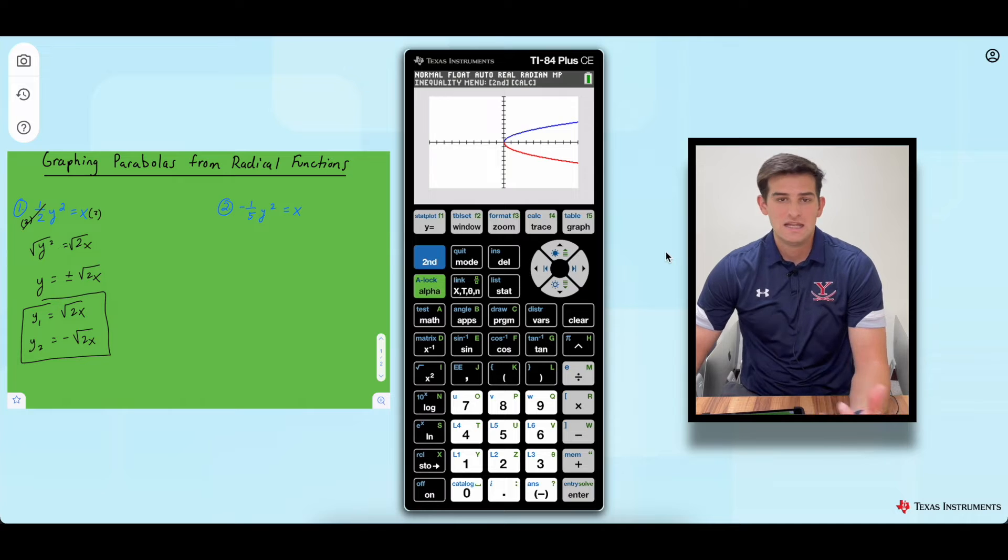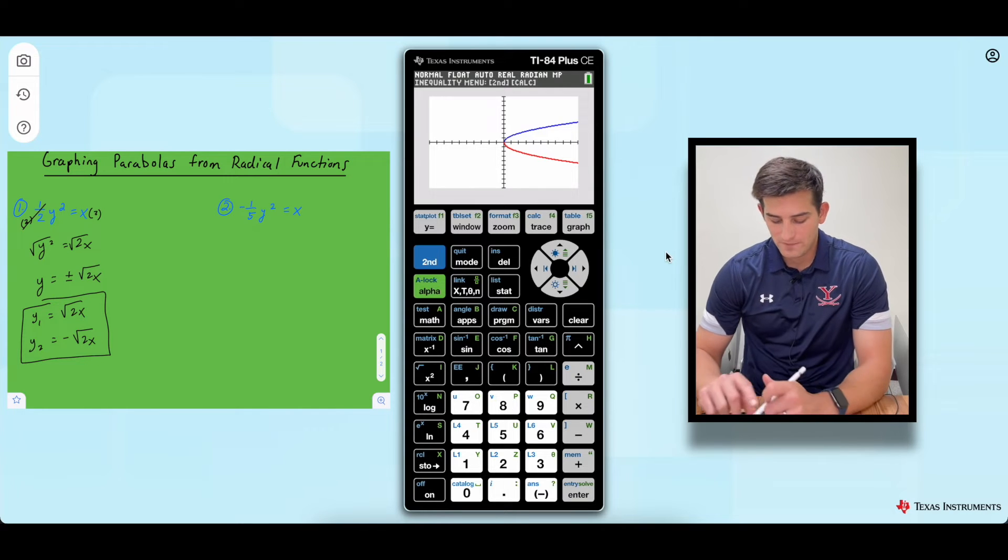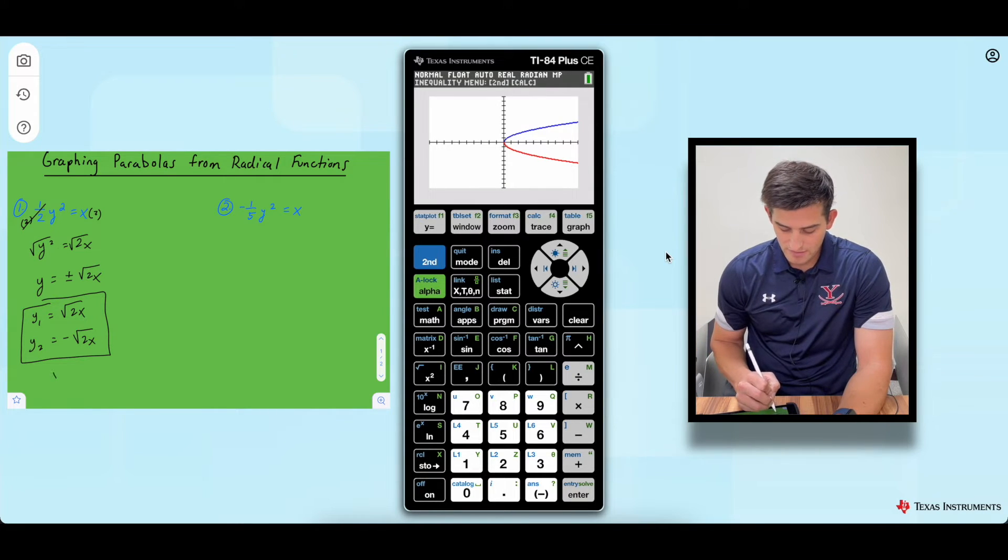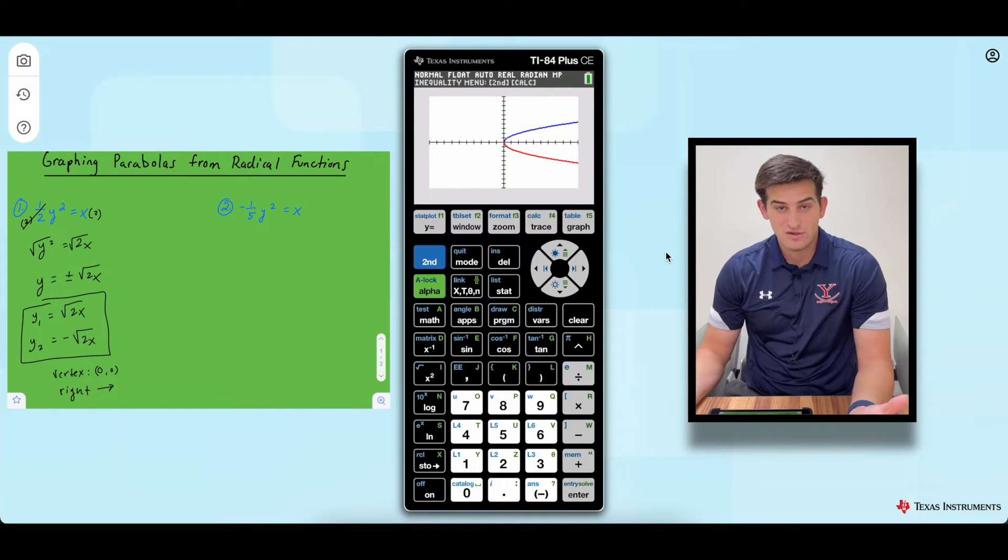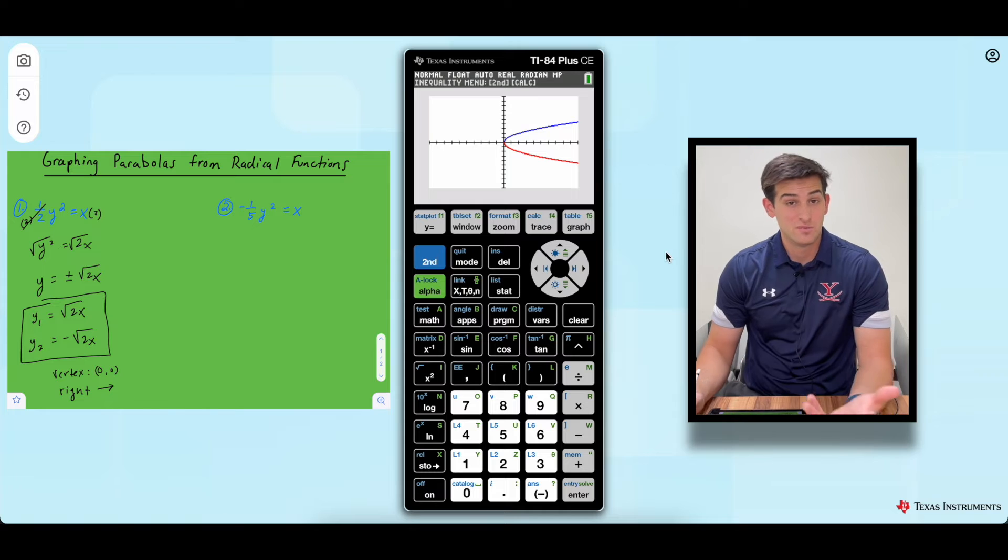So we can hit graph here and notice that we see our parabola. We can notice a couple of things. Our vertex is located at the origin and our parabola is opening to the right. So that's how we can graph a parabola on the calculator from a radical function.